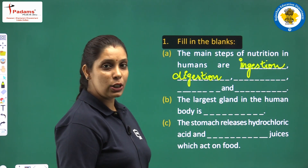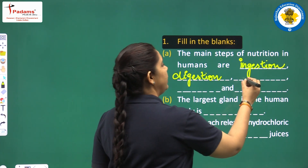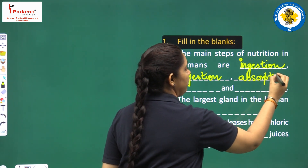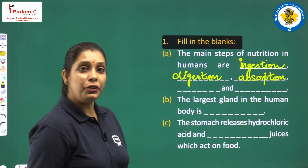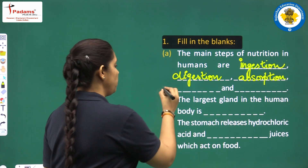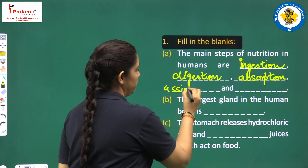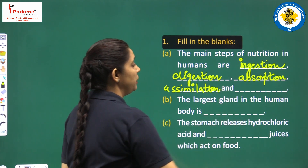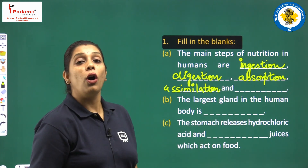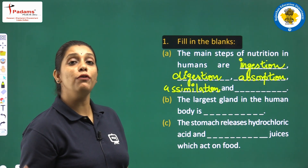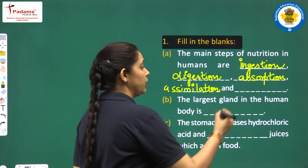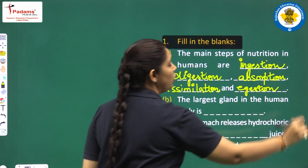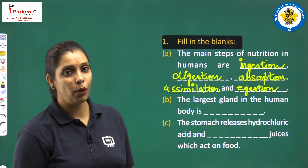After digestion, which process will come? It is absorption. After absorption, assimilation process is there. Assimilation means absorption and utilization of absorbed food. Last is ejection — ejection means removal of undigested food from the body.